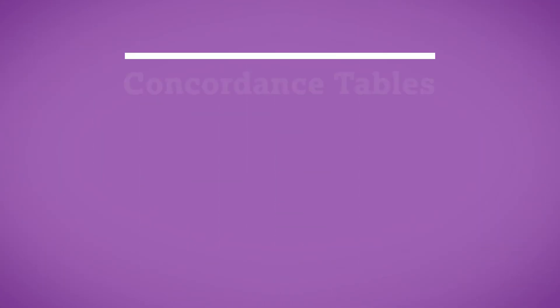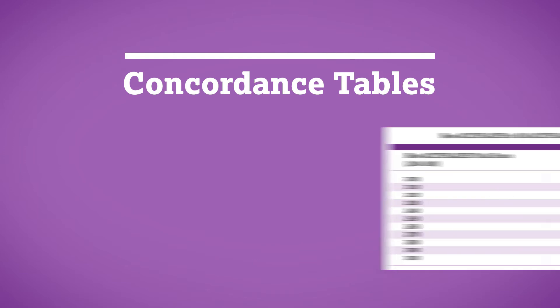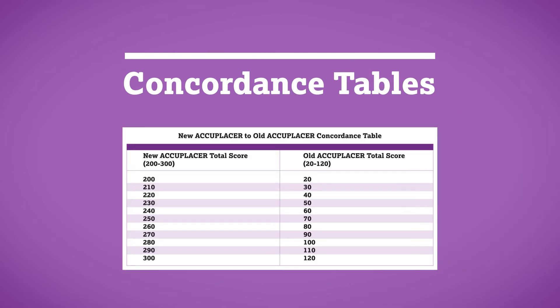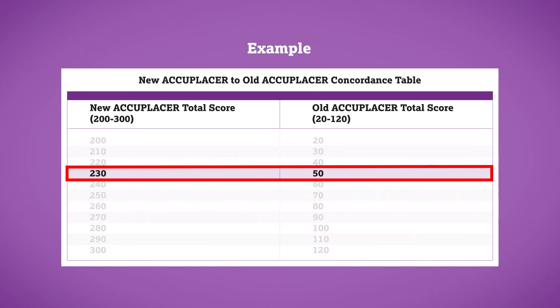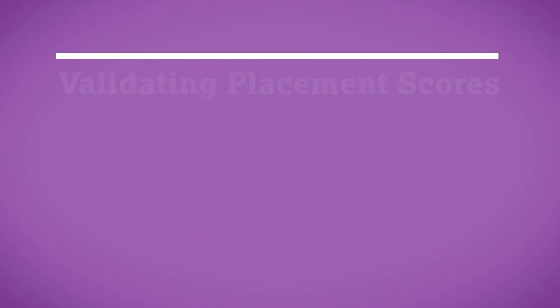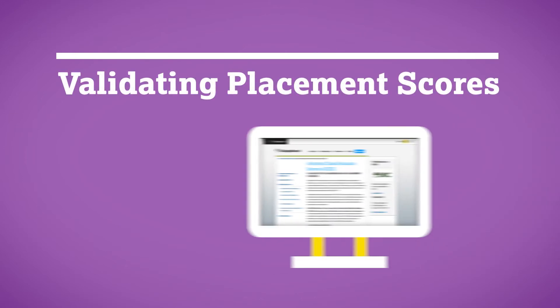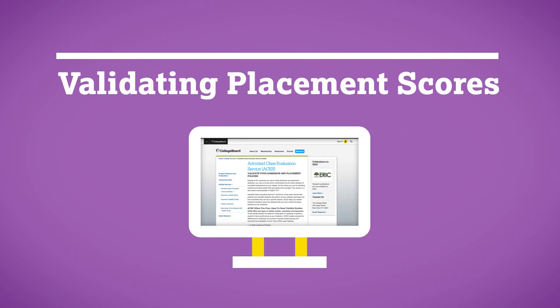The third option employs the use of a concordance table. Concordance tables estimate an examinee's score on one assessment based on their score from a different assessment. If the two tests have similar meaning, values from the concordance table can be used to set the initial cut score. Whichever method you use, after a year, we strongly recommend that you evaluate the efficacy of your placement scores and placement decisions with a predictive validity study.